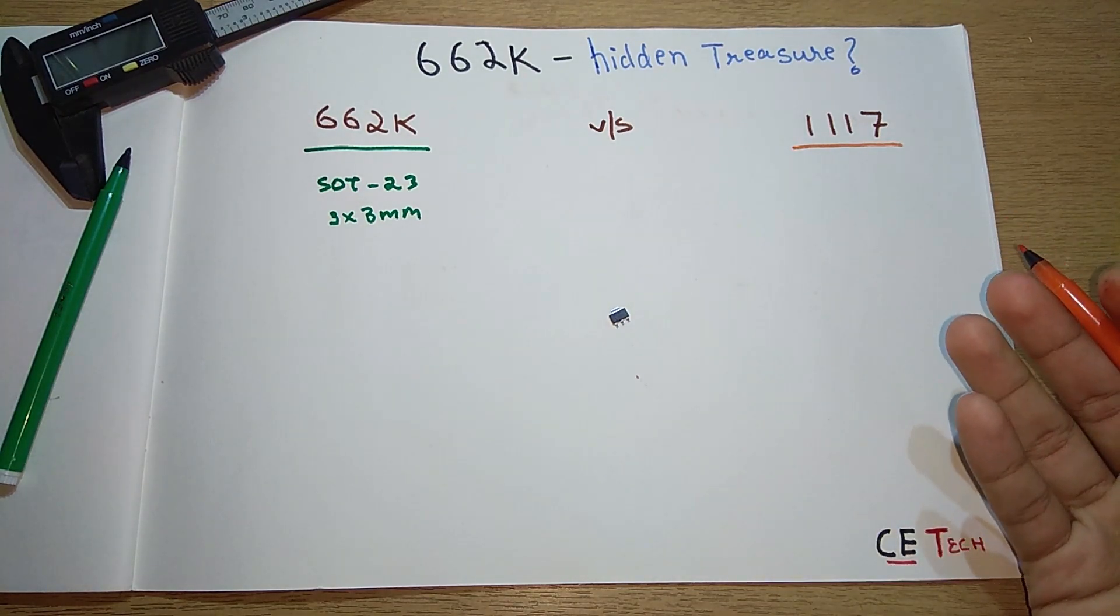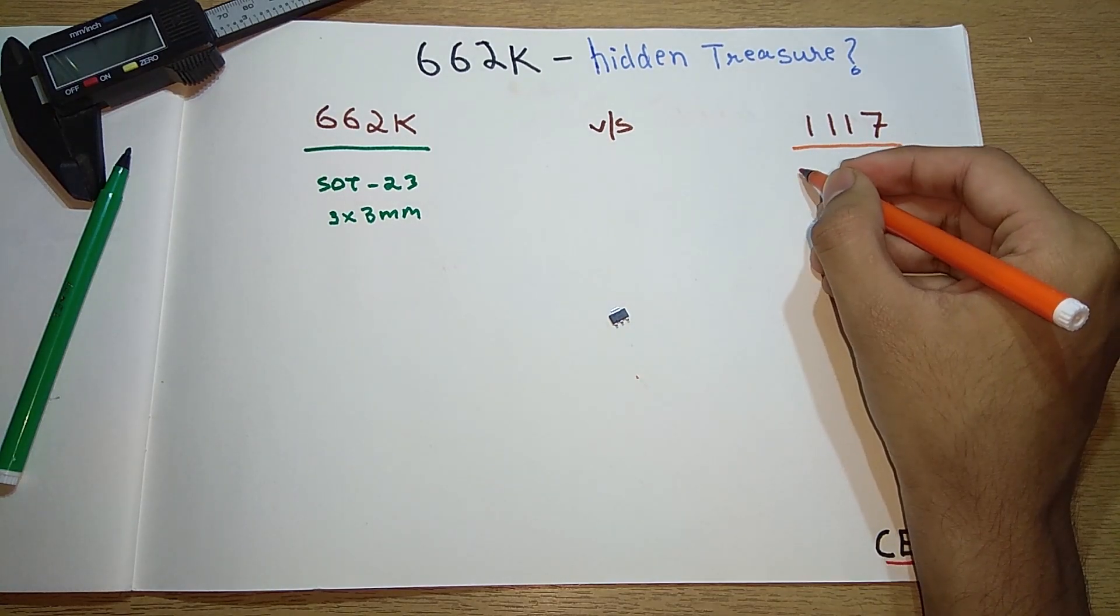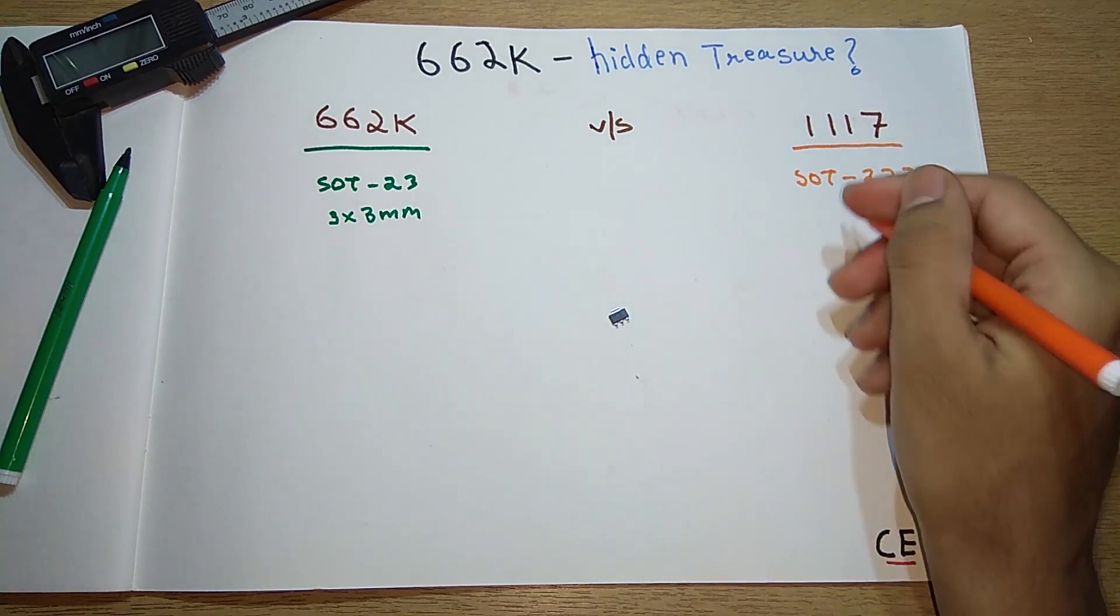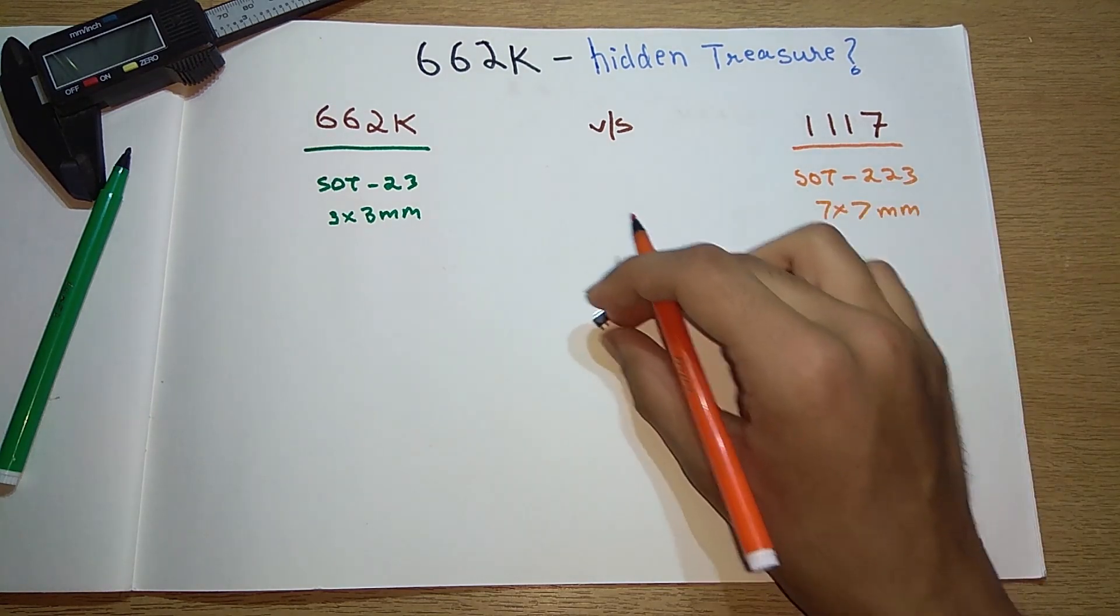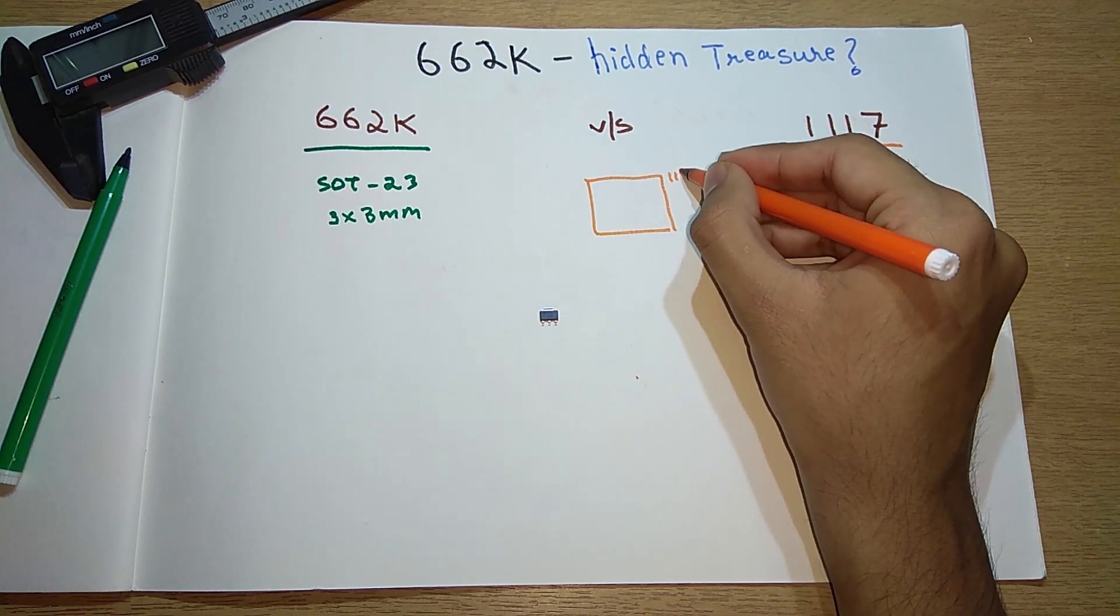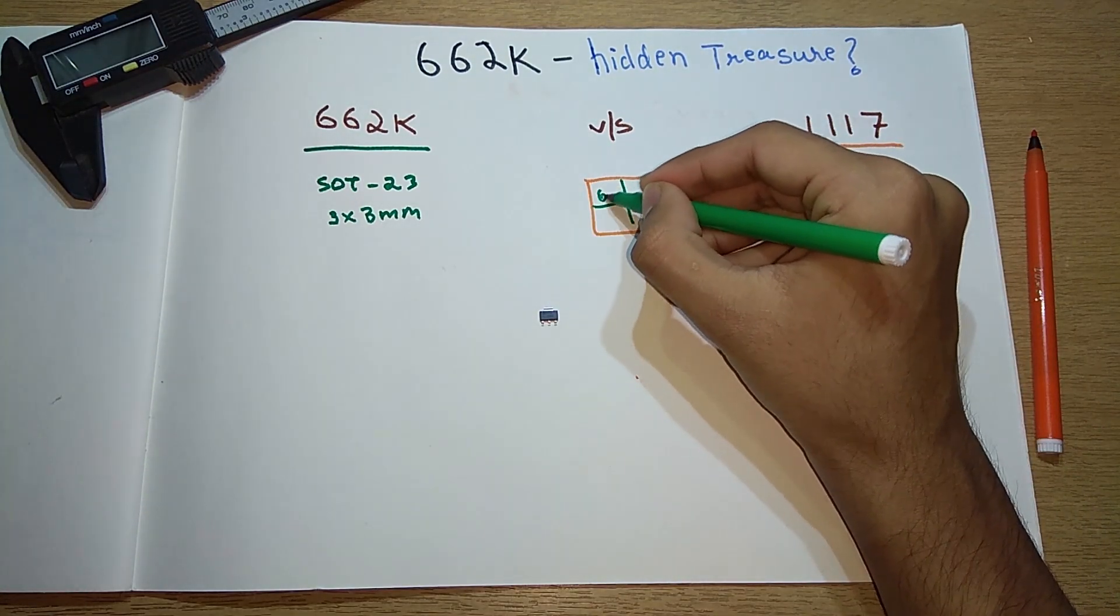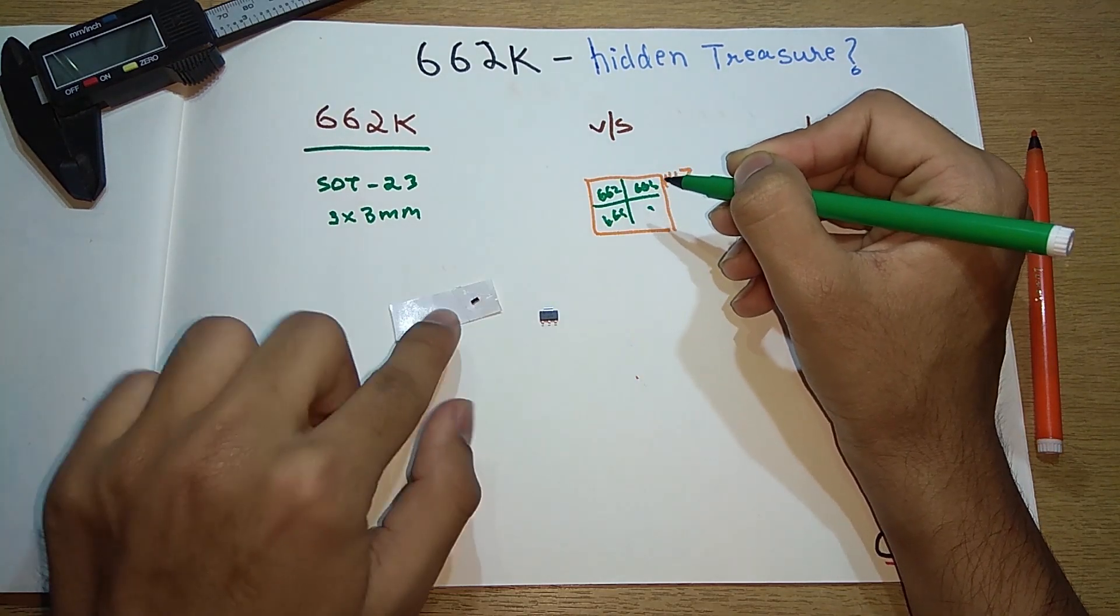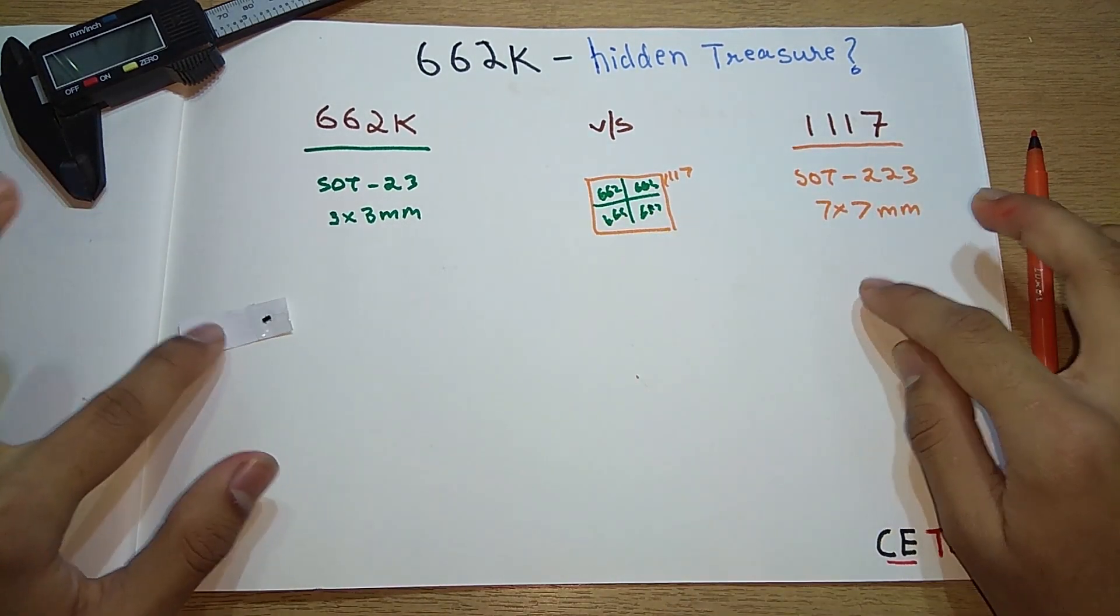So if this is the 1117, then approximately four 662Ks can fit inside this. So this chip, the 662K, is really small. Because of its size, now let's see a normal prototyping board.